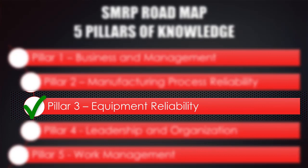Pillar 3 describes two kinds of activities that apply to the equipment and processes for which the maintenance and reliability professional is accountable. First, are those activities used to assess the current capabilities of equipment and processes in terms of their reliability, availability, maintainability, and criticality. Second, are the activities used to select and apply the most appropriate maintenance practices so that equipment and processes continue to deliver their intended capabilities in the safest and most cost-effective manner.